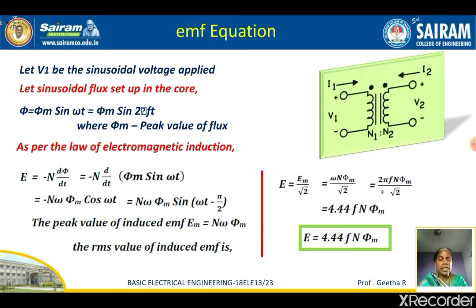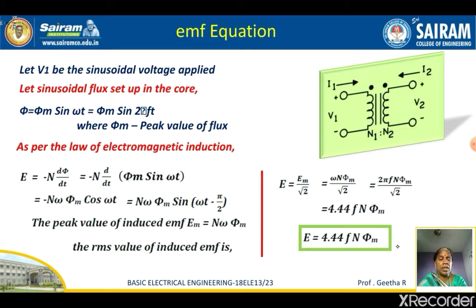This is the expression for the EMF induced in the transformer. For the primary winding where N = N1, the EMF induced in the primary is E1 = 4.44 × f × N1 × φM. Similarly, for the secondary winding where N = N2, the EMF induced is E2 = 4.44 × f × N2 × φM. Here φM is the peak value of the flux, N is the number of turns, and f is the applied frequency.